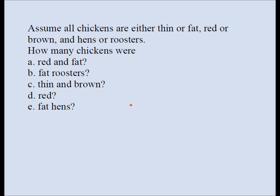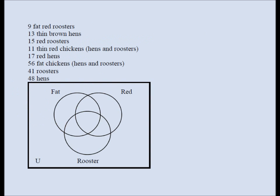Based on the previous question, we have to answer these questions. I'm going to use a Venn diagram to organize my data and then answer them. Our categories are fat or thin — I picked fat; red or brown — I picked red; and rooster or hens — I picked rooster.